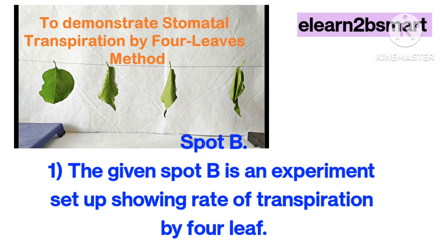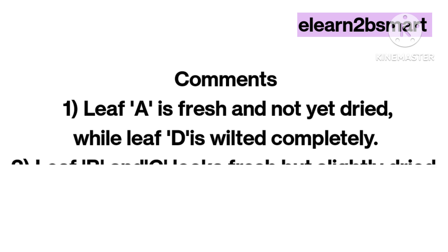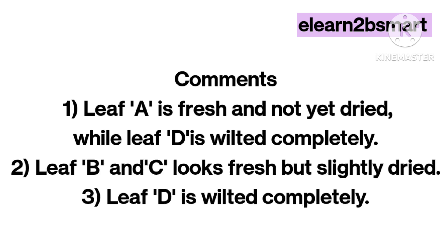Spot B: The given spot B is an experiment setup showing the rate of transpiration by four leaves. Comments: 1. Leaf A is fresh and not yet dried, while leaf D is wilted completely. 2. Leaf B and C look fresh but slightly dried. 3. Leaf D is wilted completely.